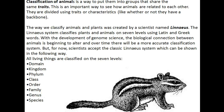Kingdom, Phylum, Class, Order, Family, Genus, Species. And we learned that King Philip came over for great spaghetti.